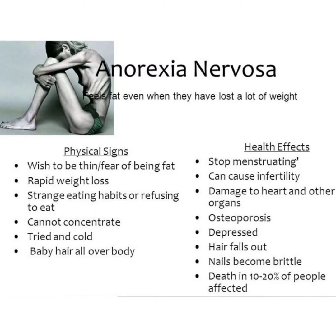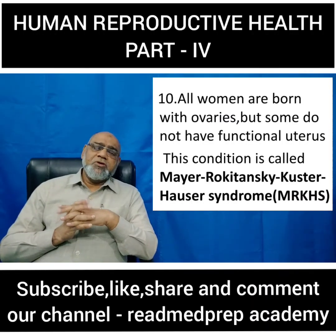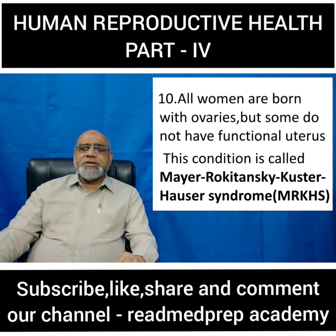Females can develop antibodies against the sperm of their partner. The sperm antibodies may be IgG antibodies, which can block the sperm and prevent fusion of the sperm with the ovum. Similarly, an antigen present in the tail can produce an IgA antibody, which prevents the motility of the sperm and stops penetration of the cervical mucus. All women are born with ovaries, but some do not have a functional uterus — this condition is called Mayer-Rokitansky-Küster-Hauser syndrome, or MRKHS.